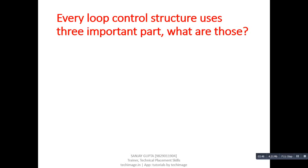Next question: Every loop control structure uses three important parts. What are those? Answer: First is initialization, second is termination condition, and third is increment or decrement.